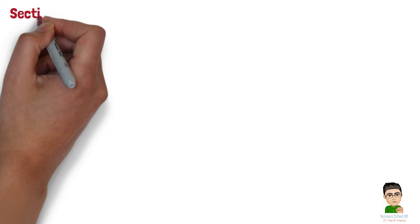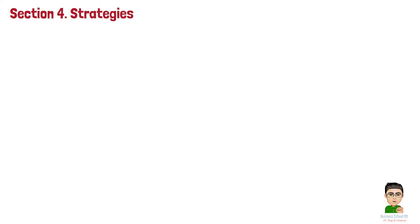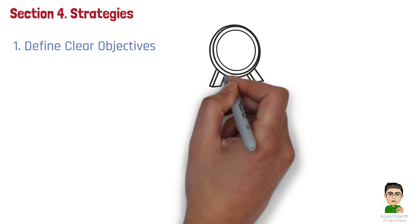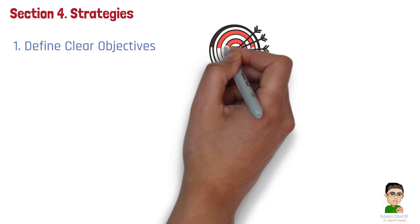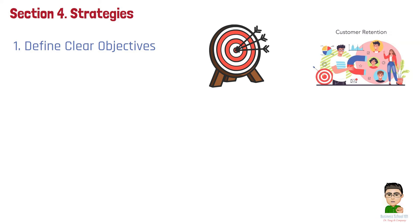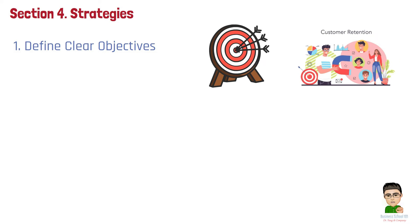Section 4: Strategies. To effectively implement data analytics in your business, consider the following steps. Step 1: Define clear objectives. Start by identifying the specific business questions you want to answer or the problems you want to solve. Clear objectives guide the data collection and analysis process. For example, if your goal is to improve customer retention, your data analytics efforts should focus on understanding customer behavior, identifying churn risks, and developing targeted retention strategies.